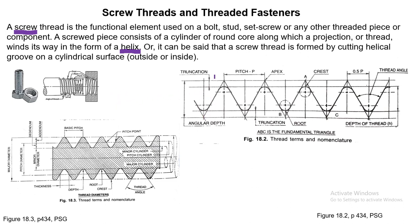This is a triangular thread. You can see there is a bit of truncation — a small portion of the tip of the crest is truncated. Similarly, the root of the thread is also truncated. This truncation is done to avoid any kind of shearing or breakage of the crest. Pitch is the distance between two consecutive crests or two consecutive roots, and the crest has been rounded off.